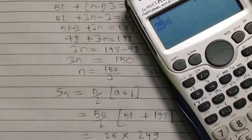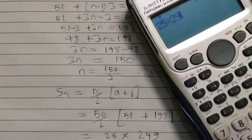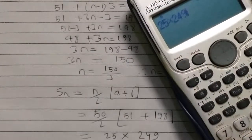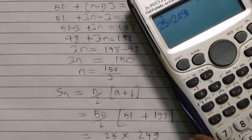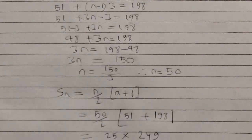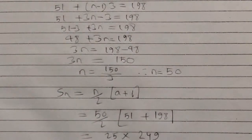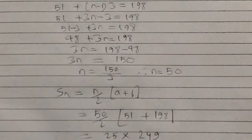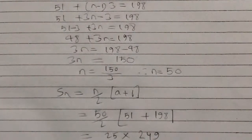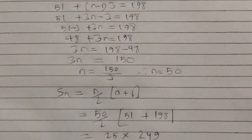25 into 249 equals 6,225. Therefore the sum of the numbers divisible by 3 between 50 and 200 is 6,225. This is the right answer.